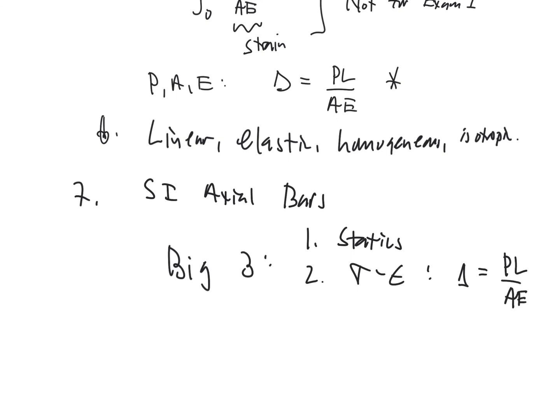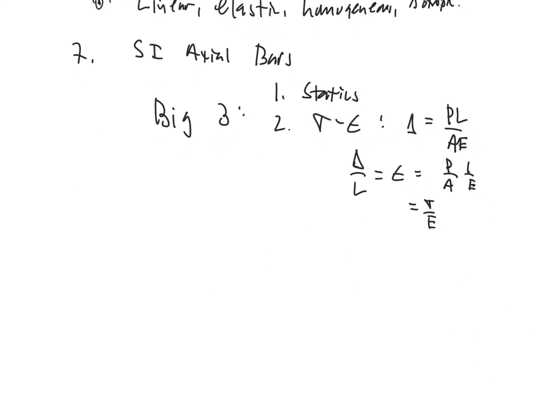Because if I bring over an L, we have delta over L, which is the strain, which is P over A times 1 over E. But P over A is stress, so it would just be sigma divided by E. Then finally, the third leg of our three-legged stool that makes us a powerhouse on these is going to be compatibility. So those are the concepts, equations that you need for exam 1. And conveniently, that closes out part A.